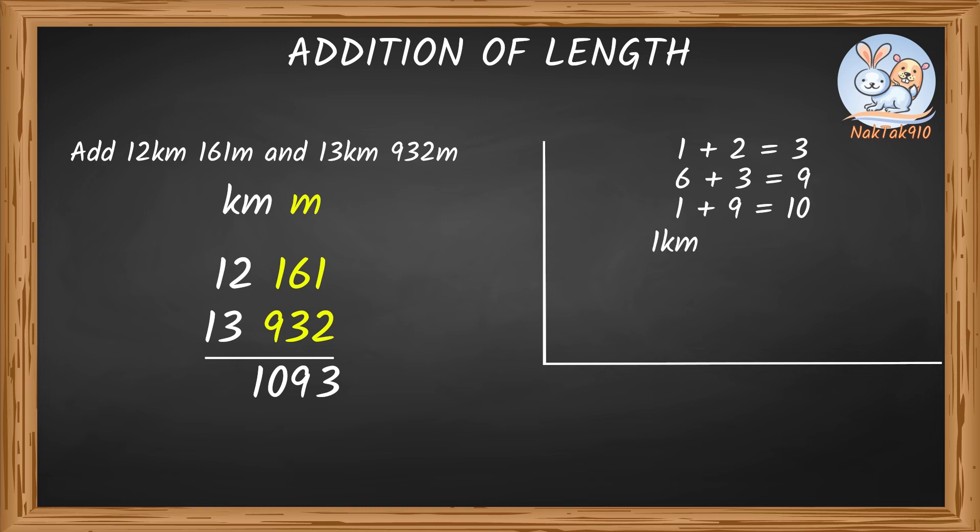1 kilometer equals 1000 meters. So 1093 meters equals 1 kilometer and 93 meters. That means you can carry the 1 kilometer to the kilometer section and group the kilometers together. Now we are done adding the meters column.